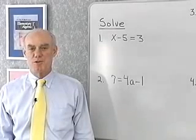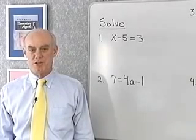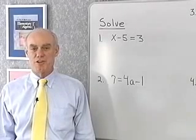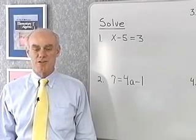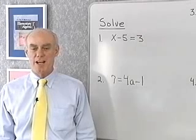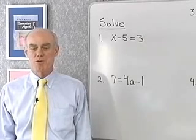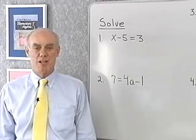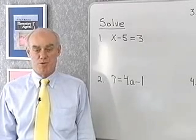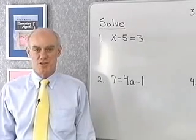There are two main properties we use to solve equations. The first one is called the addition property of equality, and it tells us that we're free to add the same number to both sides of an equation any time we want, and it won't change the solution.